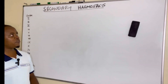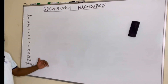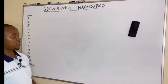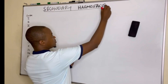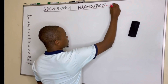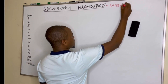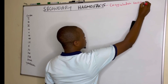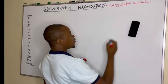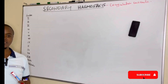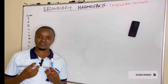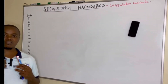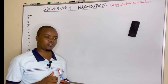Secondary hemostasis, which we are calling the coagulation cascade, is a cascade of events. We are going to see a cascade of events whereby factors which are produced in inactive form — or we can call them zymogens — are activated.